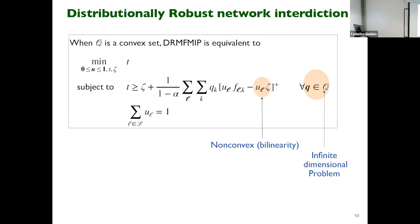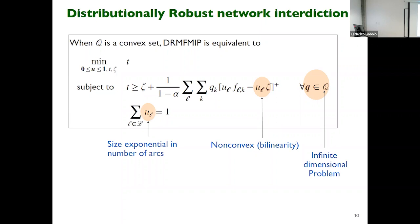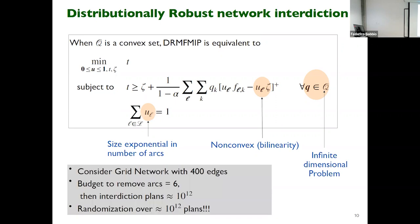There are three issues in this problem. First, it is an infinite-dimensional problem because the constraint is indexed by q lying in calligraphic Q. Second, the problem is non-convex due to bilinearity between U and zeta, which are both decision variables of the interdictor. Third, the size of the problem grows exponentially with the size of the network — for a graph with 400 edges and a budget of six arcs, the number of interdiction plans equals 10 to the power of 12.